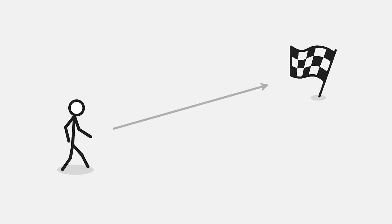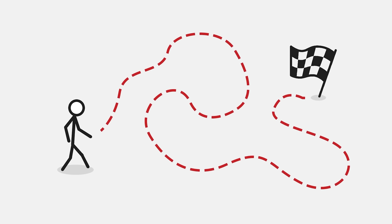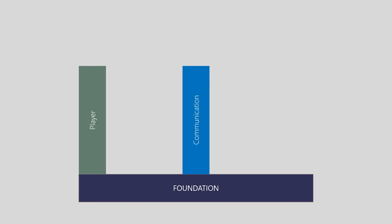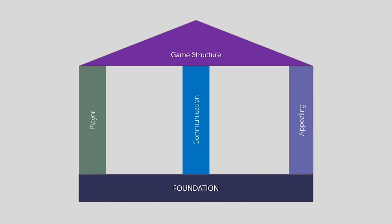Finally, here is my initial learning about the start and the basic understanding of game design and development. The foundation of any game development stands on three pillars: player, communication, and appealing.